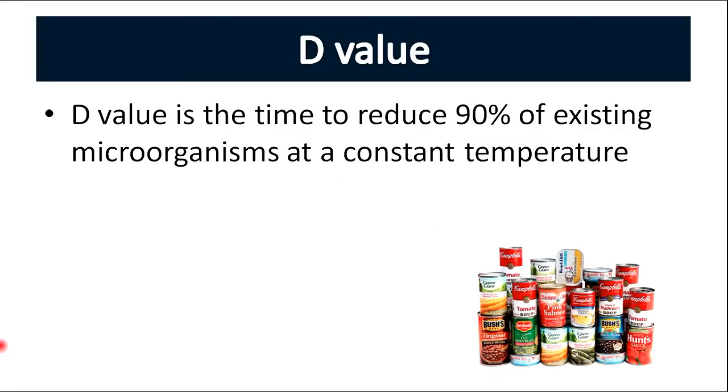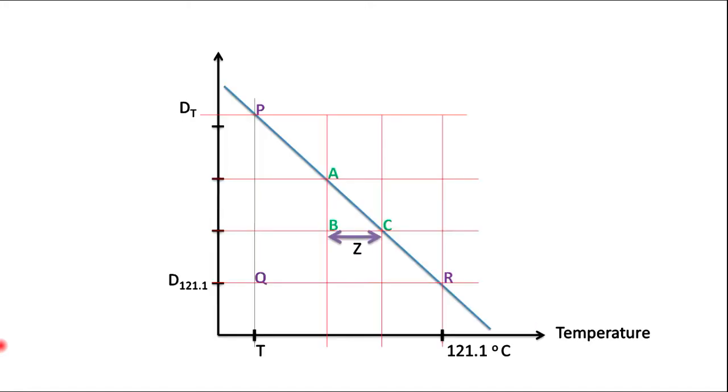We learned that D value is the time to reduce 90% of existing microorganisms at a constant temperature. Let's assume the constant temperature is 121.1°C and we'll do a calculation to find the thermal reduction time at a given temperature. In this graph, you can see PQR and ABC are similar right angle triangles.